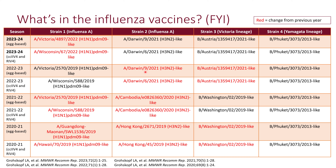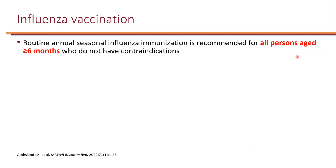It has not changed from last year; we have not seen deviation. There is a difference between what's in the egg-based vaccines compared to the cell-cultured or recombinant vaccines, but for the most part, as far as what's in the vaccine, they're not really considered clinically different.